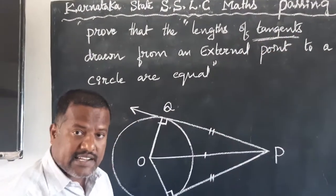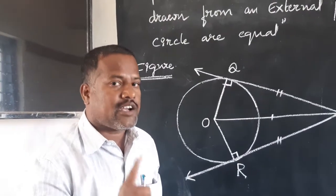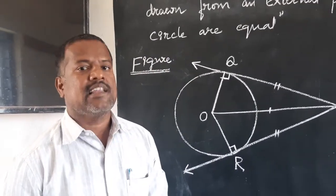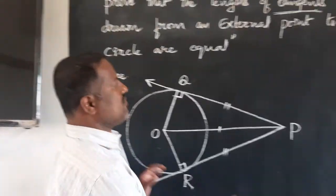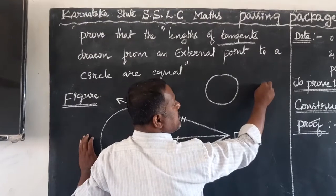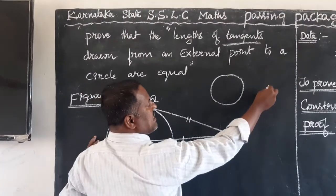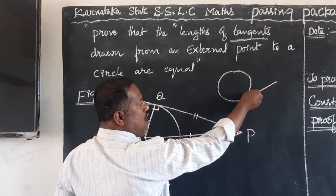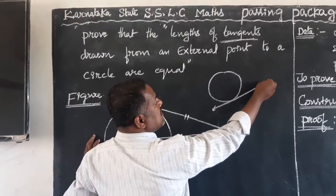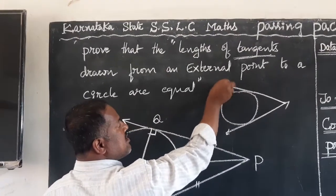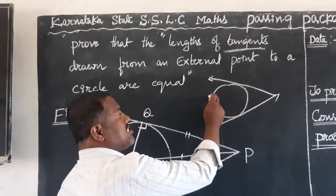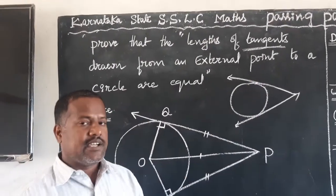First, let us understand the meaning of tangent. A tangent is a straight line which touches the circle at one and only one point. Suppose I take a circle and an external point — if I draw a line from the external point to the circle, that line is called a tangent. If I draw another tangent, that is another line touching the circle at one and only one point.